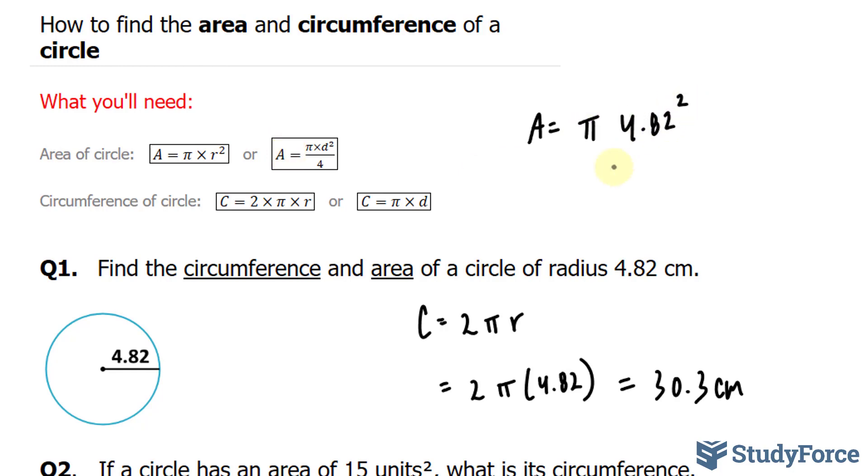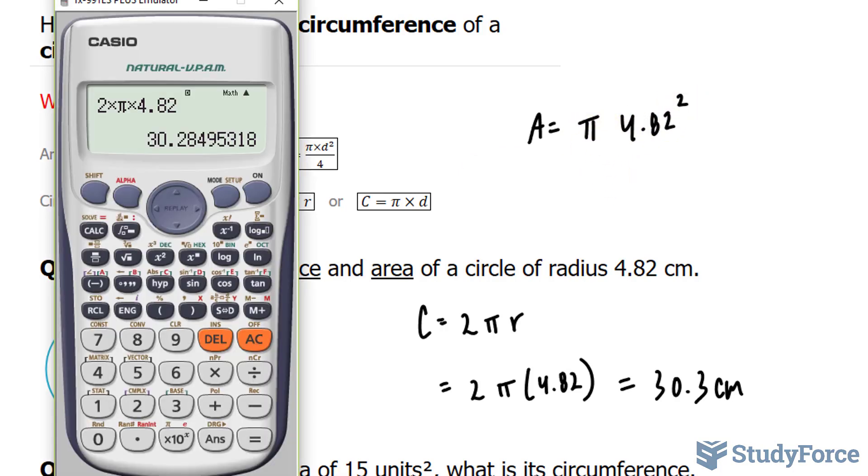In between these two numbers is multiplication. So once again, I'll open up my calculator. I'll click the pi button, Shift and this times 4.82 raised to the power of 2. Now if your calculator does not have a power function, then you can multiply 4.82 times 4.82. It's the same thing. And we end up with 72.9.